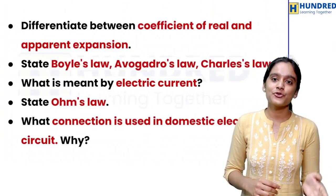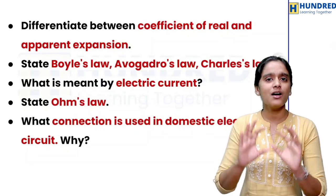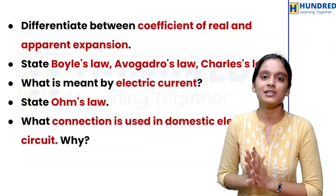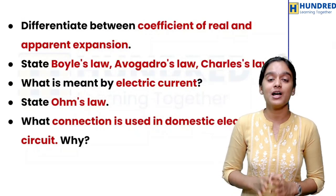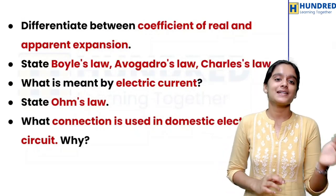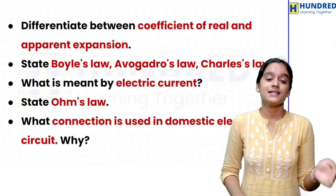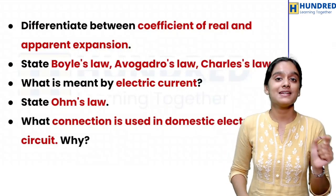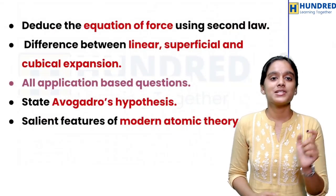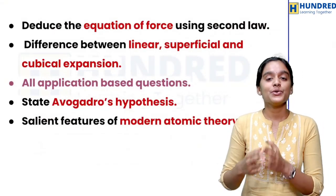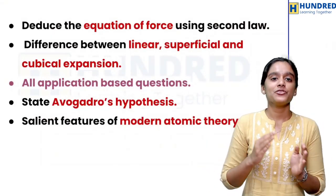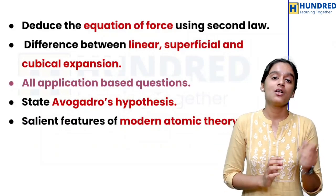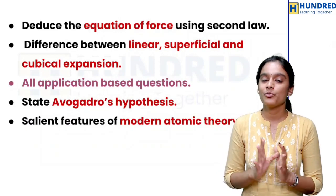State Boyle's law, Avogadro's law, and Charles's law — all these laws come together. If we have the word, we will reply in the answer sheet for full marks. Next: what is meant by electric current? State Ohm's law. What connection is used in a domestic electric circuit, and why? Deduce the equation of force using the second law. Differentiate between linear, superficial, and cubical expansion. All application-based equations are very important.